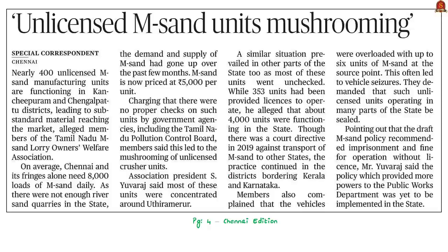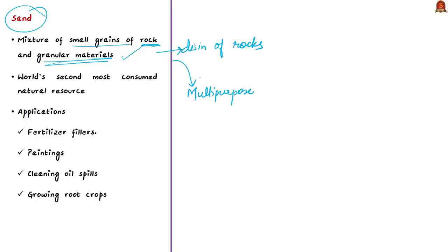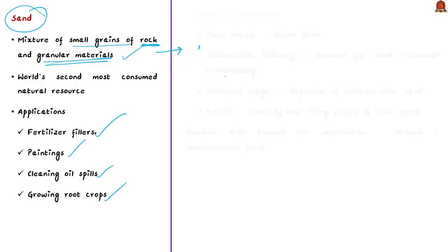The next discussion is about unlicensed M-Sand manufacturing units emerging in districts of Tamil Nadu. Unlicensed units allegedly lead to substandard M-Sand reaching markets, prompting licensed manufacturers to ask for strict regulatory measures. Sand is defined as a mixture of small grains of rock and granular materials resulting from the disintegration of rocks. Sand is the world's second most consumed natural resource after water, used as fertilizer fillers, in paintings, cleaning oil spills, growing root crops, and most popularly in the field of construction.